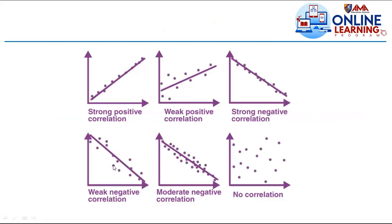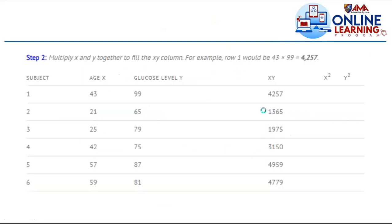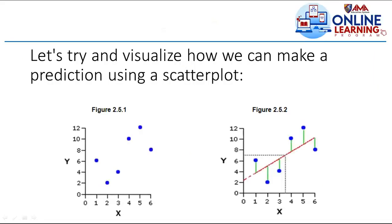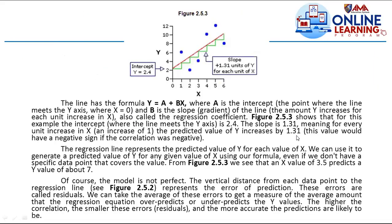A strong positive correlation has a positive slope, and a strong negative correlation has a negative slope. The regression line represents the predicted value of y for each value of x. We can use it to generate a predicted value of y for any given value of x using a formula. From figure 2.5.3, an x value of 3.5 predicts a y value of about 7.